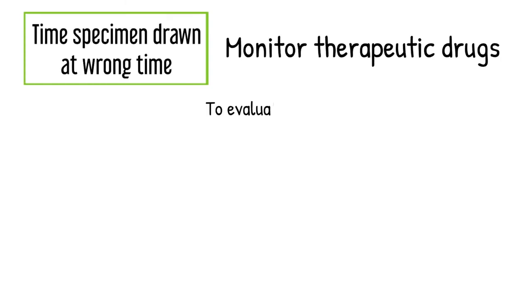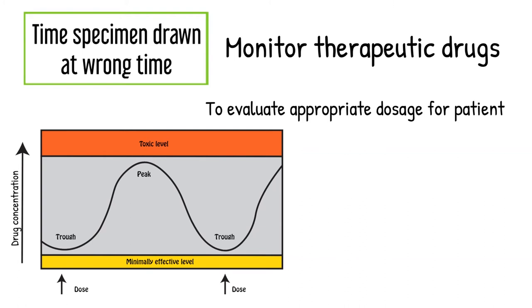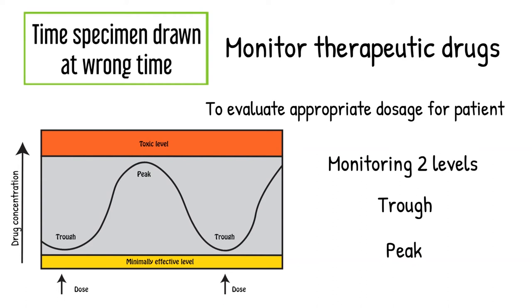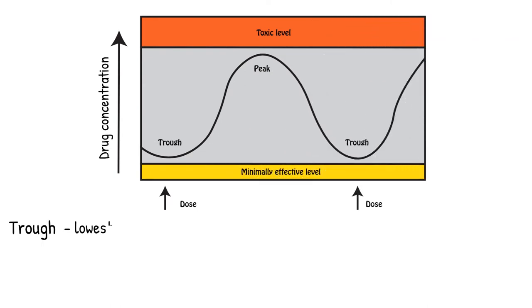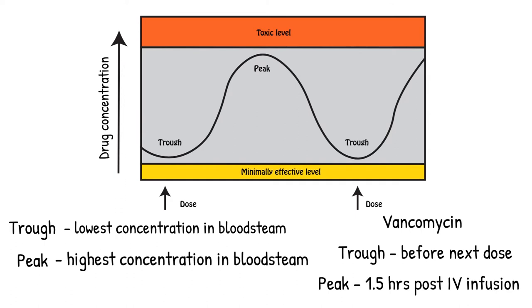Time specimen drawn at the wrong time. Timed draws are used to monitor therapeutic drugs. The laboratory monitors a therapeutic agent to adequately evaluate the appropriate dose for a patient. The collection and testing of specimens for trough and peak levels is necessary. The trough level is the lowest concentration in the patient's bloodstream; the specimen should be collected just prior to administration of the drug. The peak level is the highest concentration of a drug in the patient's bloodstream. Each drug has a different peak time. For instance, with coumadin, the trough should be collected just prior to the next dose and the peak should be drawn about one and a half hours after IV infusion has completed.